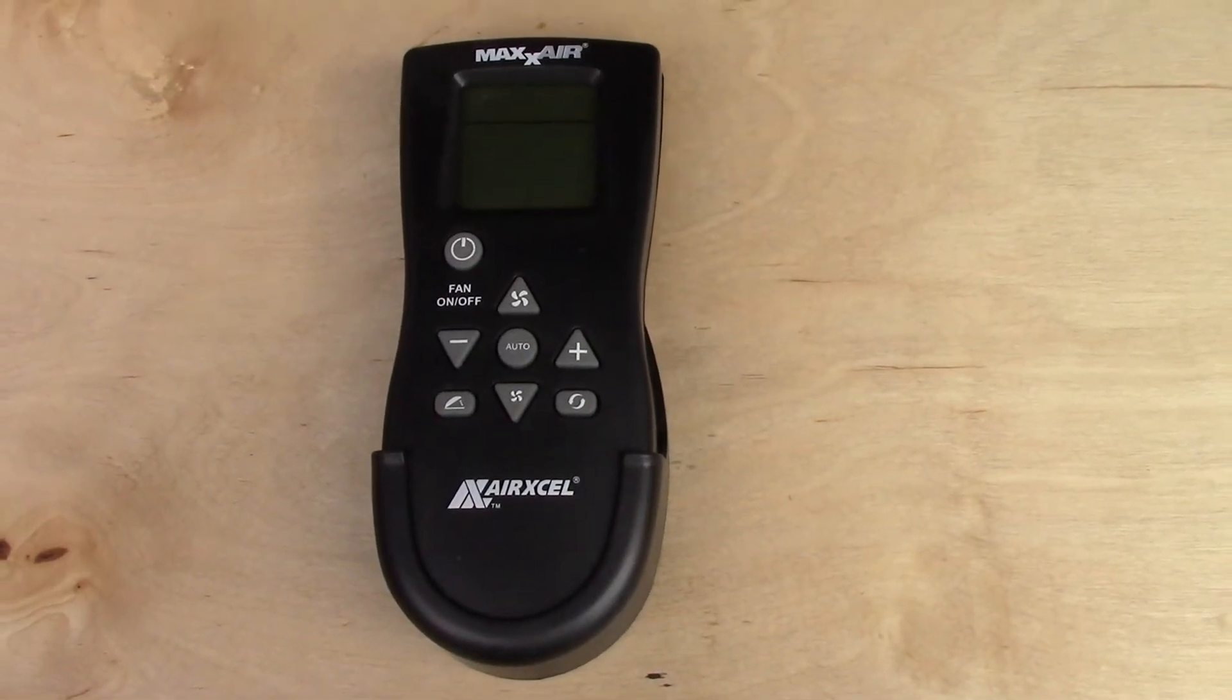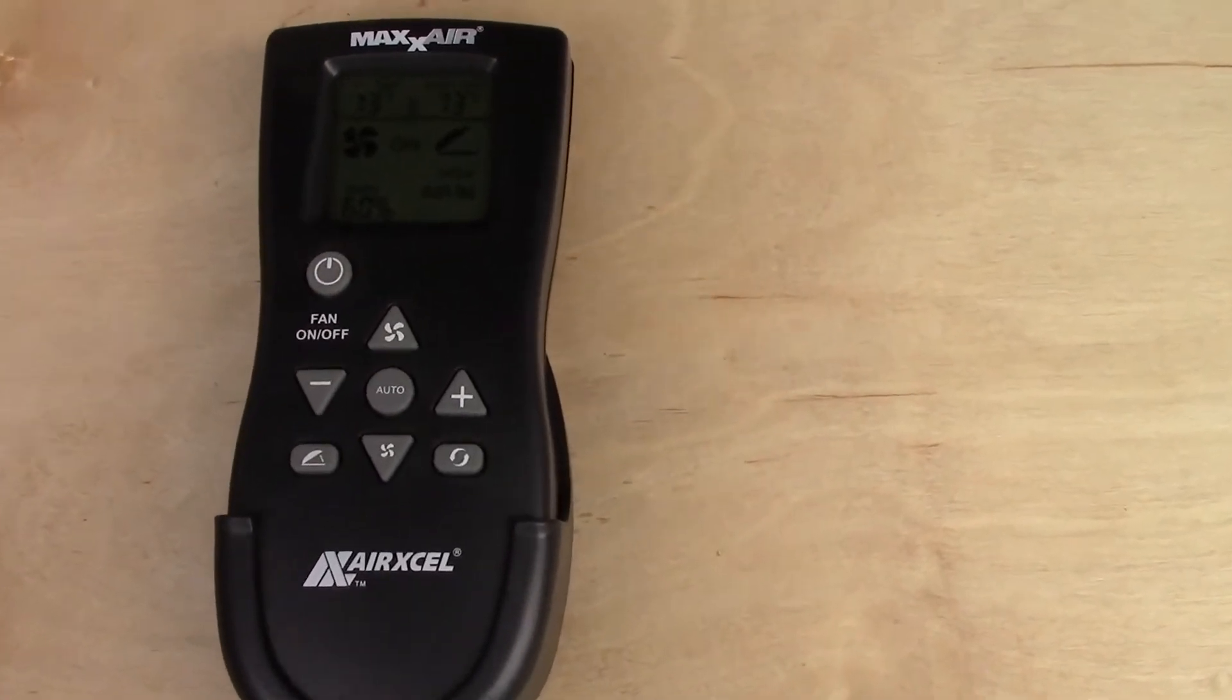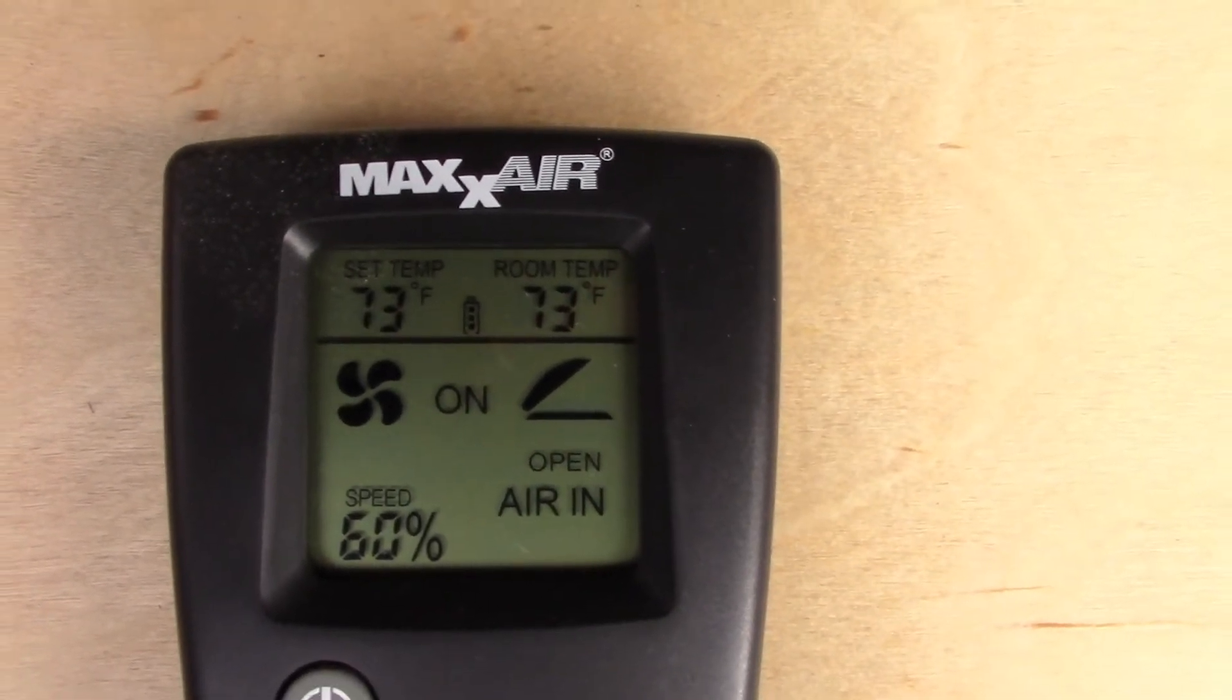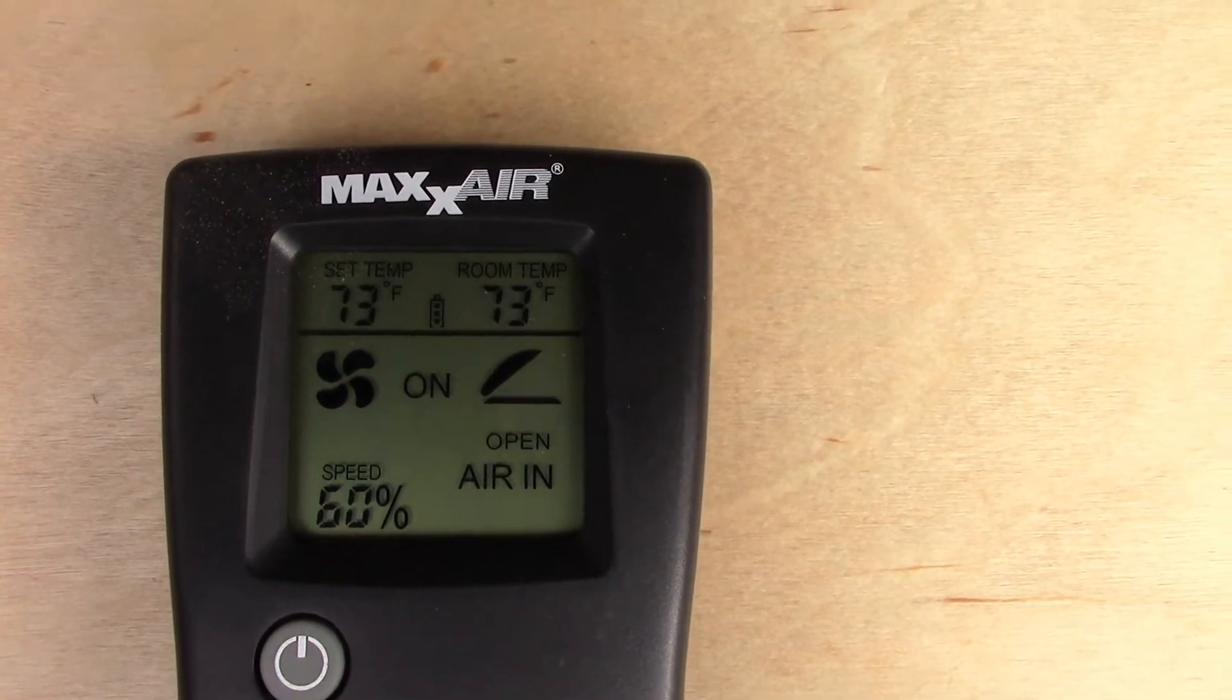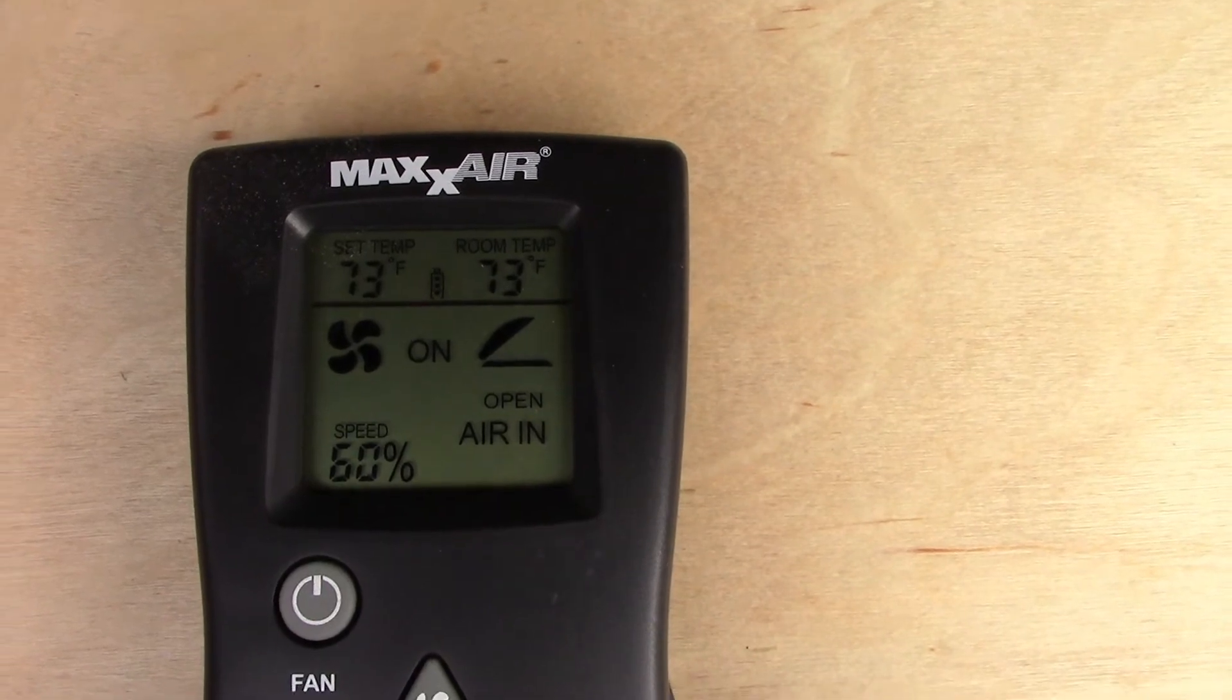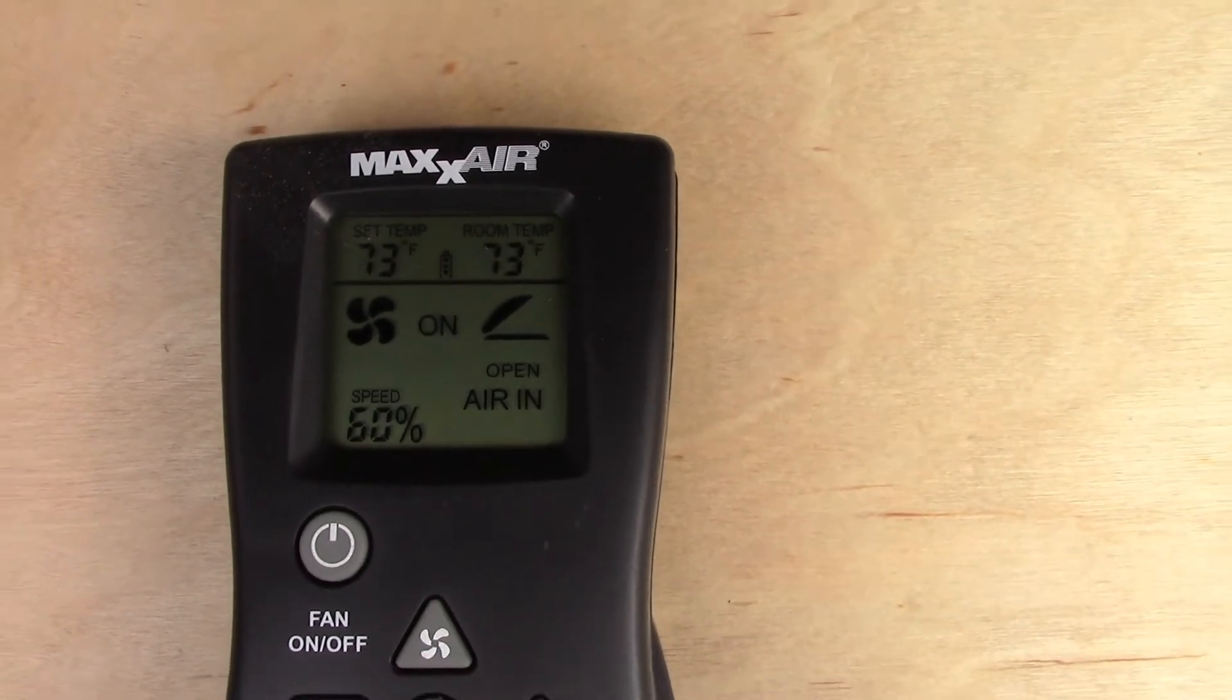This Max Air fan comes with a remote control. We'll turn it on. It reads the temperature, and you can set the temperature. You can adjust the speed, and you can open and close it. It also has a sensor that if it starts to rain, it will automatically pick that up and close the fan. Let's see here. I'll show you how this operates.